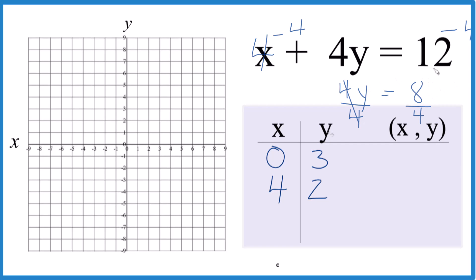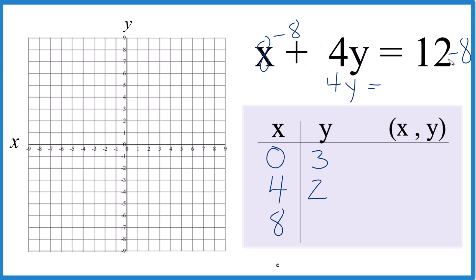One more. How about we say x is 8. If x is 8, 8 plus 4y equals 12. Subtract 8 from both sides. So this gives us 0. So 4y equals 12 minus 8, which is 4. Let's get y by itself. Divide both sides by 4. This is 1. So y equals 4 over 4. Y equals 1.